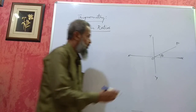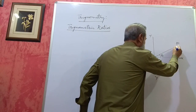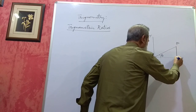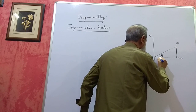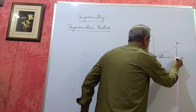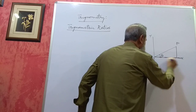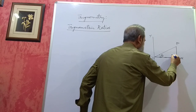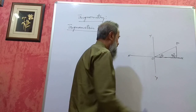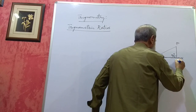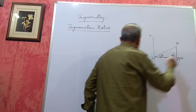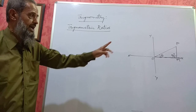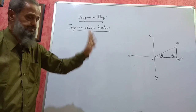Now, what I do here is I will drop from P a perpendicular onto the x-axis. This is my x-axis. I will drop a perpendicular to this, so this angle is 90 degrees. I will call this point as M. So, OPM is a right-angled triangle. I am getting a right-angled triangle OPM.